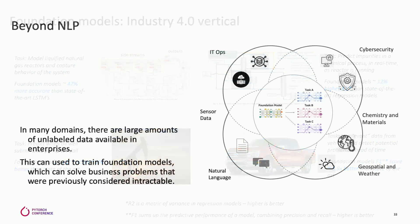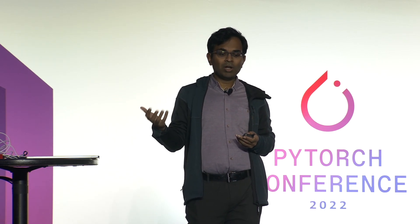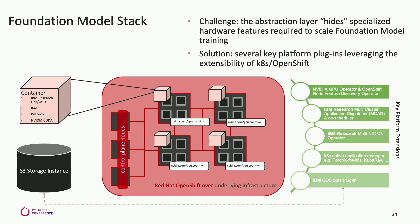We are looking at a much broader lens — IT operations, sensor data, geospatial and weather, chemistry and materials, and many other domains, applying foundation models throughout. To enable all of these, because they come from different client needs, we're building a middleware stack for enabling foundation models with PyTorch at its heart. PyTorch is the core of how we scale and get to those larger numbers, and that's where PyTorch FSDP comes in.